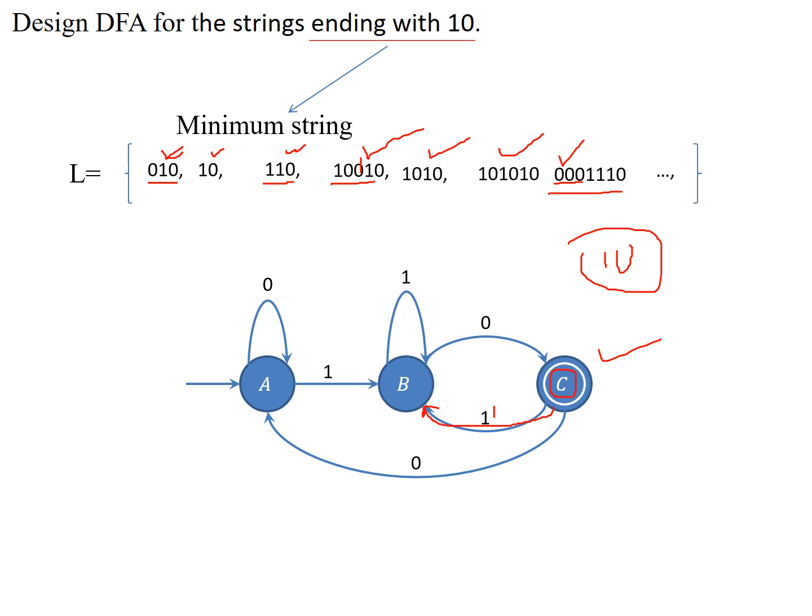Before writing a transition diagram, try to write down all possible valid strings first. Start constructing from the minimal string, then go on to more complicated strings — this makes it much simpler to understand the concept of DFA. There are no strict rules for construction like this, but starting with minimal strings helps you understand the problem and build the complete DFA.